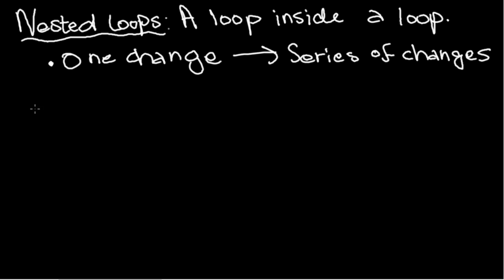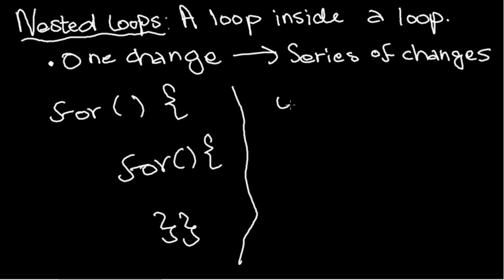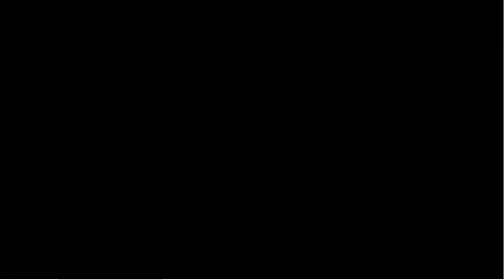So what kind of loops can you put inside a nested loop? Well you can have a for loop inside another for loop, or you can have a for loop inside a while loop, or a while loop inside a while loop, or a while loop inside a for loop. There are many possibilities.